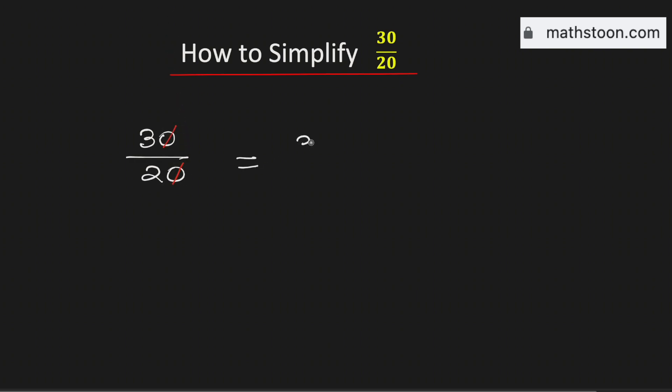So it is now equal to 3 over 2. As both the numbers 2 and 3 are prime numbers, this fraction cannot be simplified further.